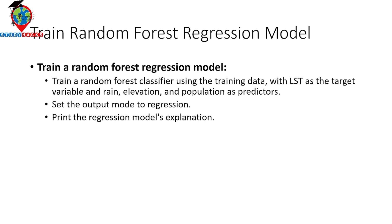To train this model, we use the random forest classifier. We train the data with LST as the target variable and use rainfall, elevation, slope, and other types of data as the predictors. We set the output mode to regression. Then we print the regression model explanation to get all the details.